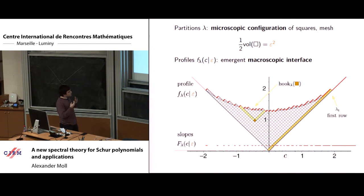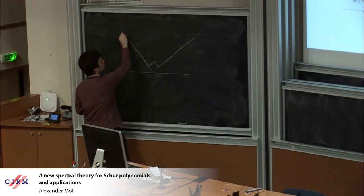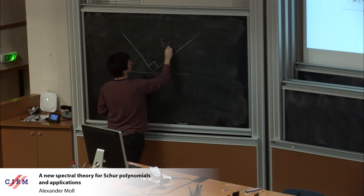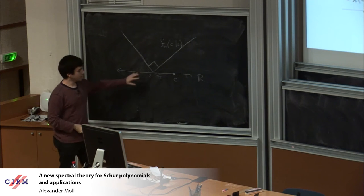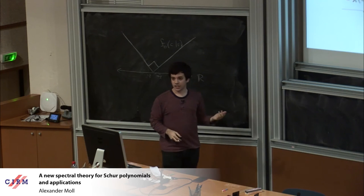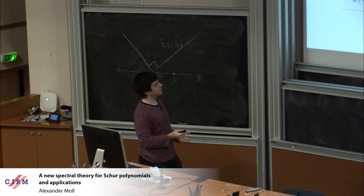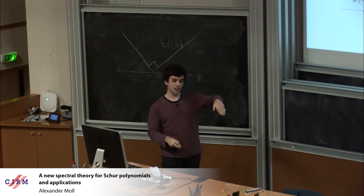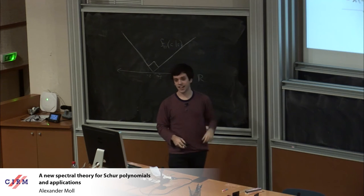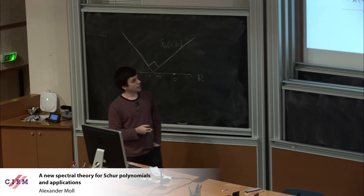There are also macroscopic quantities — things which don't depend on the mesh size, but only on the emergent interface. This quantity is a profile: the profile f is a function of a real variable. For the partition with one box, it's a simple piecewise linear 1-Lipschitz function. To this macroscopic quantity I can associate another macroscopic quantity, which is just the slopes of the partition. If I look along and keep track of when I'm going down and when I'm going up, you can see this alternates in a kind of crazy way. There are a lot of great enumerative things we can ask about these objects.